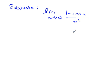Hey guys, it's Adam from BBT again. So in this question, we'll be looking at how to evaluate a limit as x approaches 0 of 1 minus cos x over x squared. In looking at this question, you might ask yourself where the heck do I start?